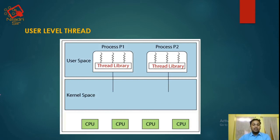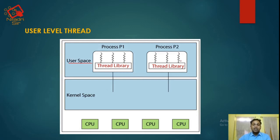You can see the picture of user-level threads. This is the user-space. You can see process P1 and process P2. This is the thread library accessible by all threads, and this is also a thread library for process P2.